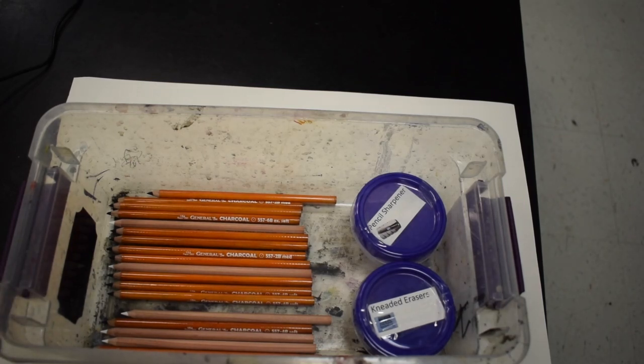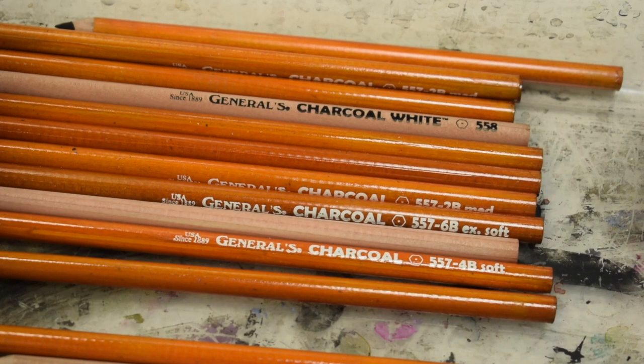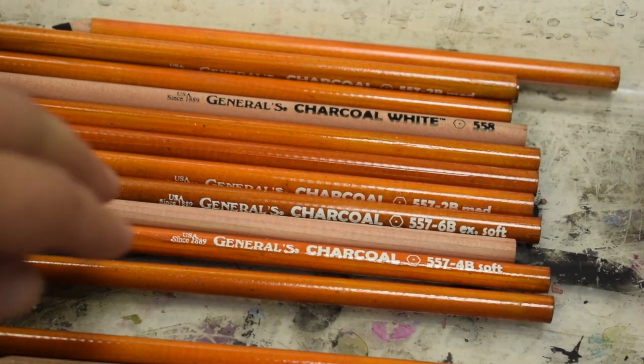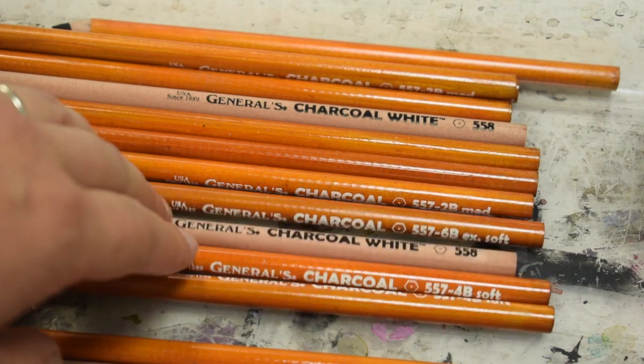Here are your charcoal boxes. Inside your charcoal box you're going to find a whole variety of charcoal pencils. There should be four types of pencils per student and this is what they look like up close.